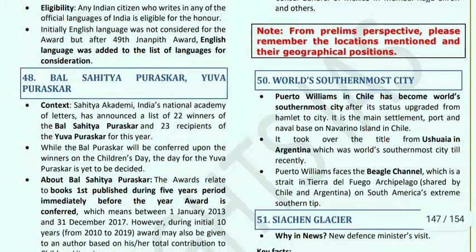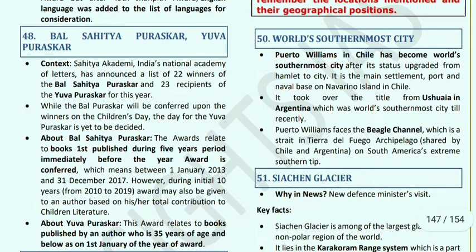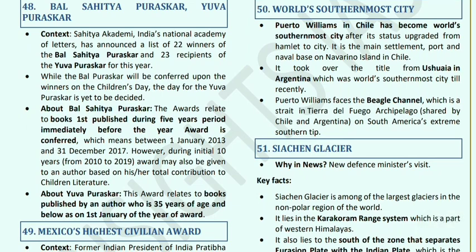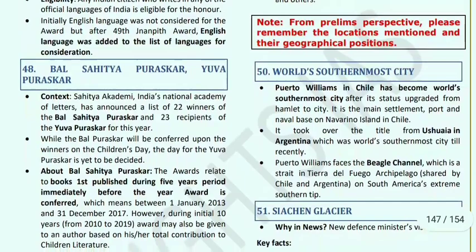Bal Sahitya Puraskar and Yuva Puraskar: Sahitya Akademi, India's national academy, recognized 22 winners for Bal Sahitya Puraskar. The Bal Puraskar is given on Children's Day. Bal Sahitya Puraskar is related to books published during the five-year period immediately before the year the award is conferred — meaning from 1 January 2013 to 31 December 2017. In the initial 10 years, awards were author-based. Yuva Puraskar is for books published by authors aged 35 years and below as of 1st January of the award year.